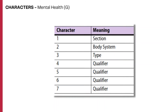The seven characters in this section: the first character for the mental health section is G. Since the body system does not apply for this section, the second character is assigned the value Z, or none, always. The third character is for the root type and describes the type of mental health procedure that is performed.